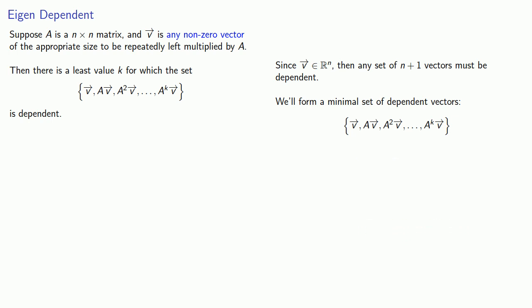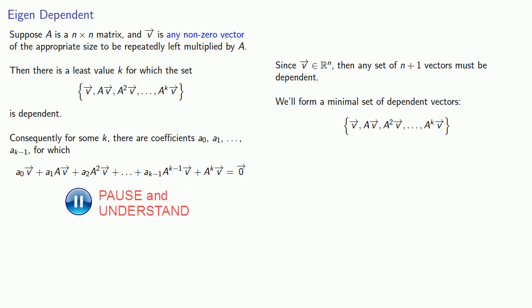Since the set without A^K V was independent, we know there are non-zero values a_0 through a_{K-1}, for which this linear combination is equal to 0.